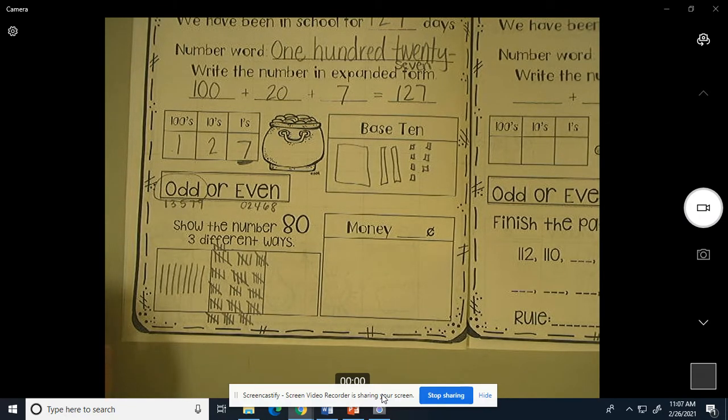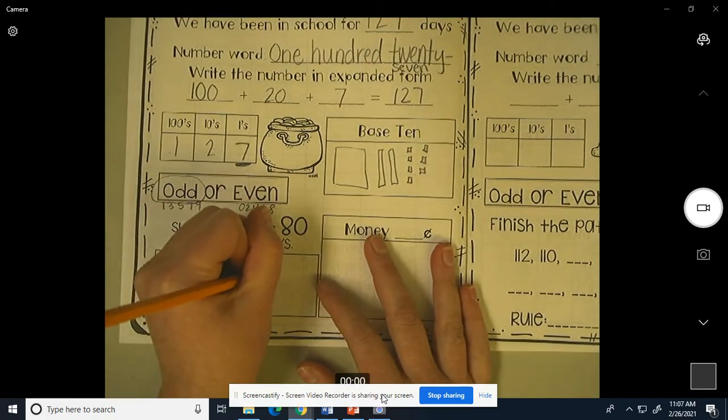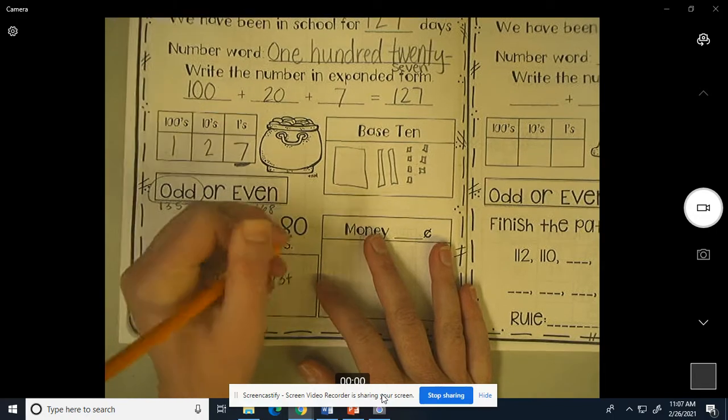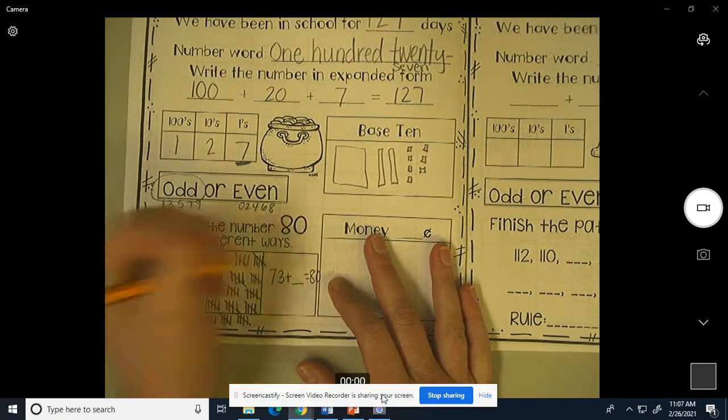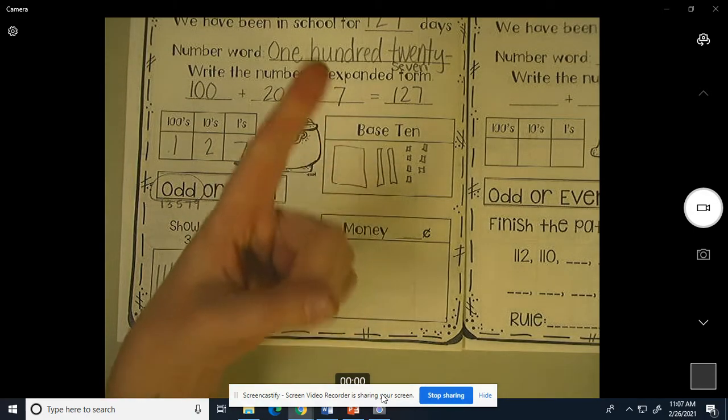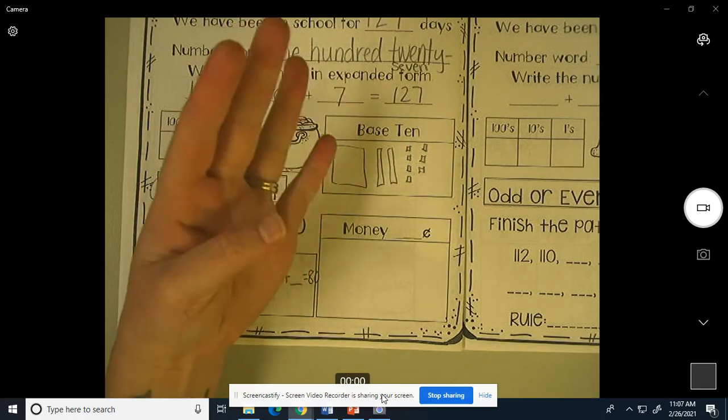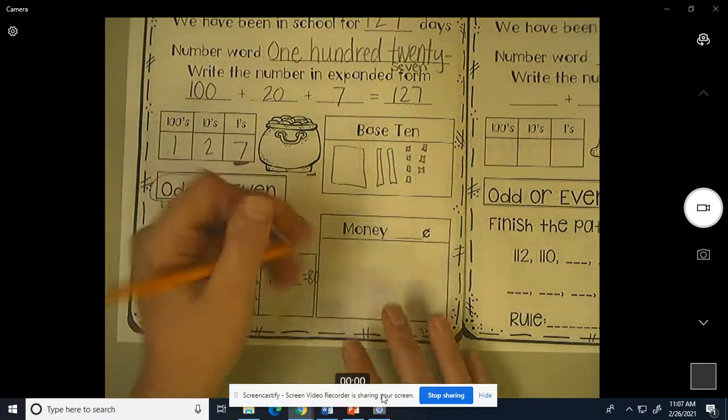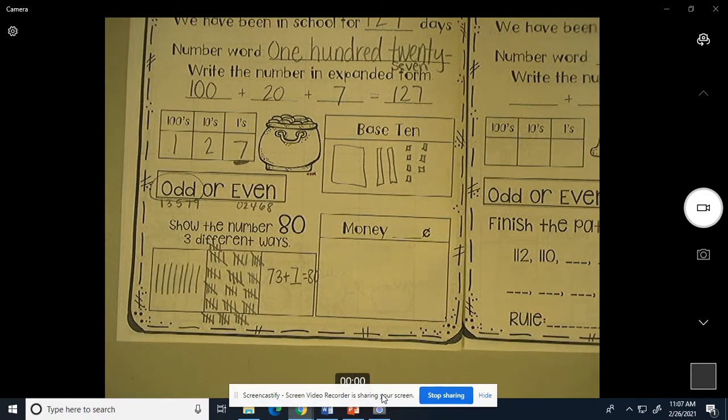And we can do the number 80 as an addition sentence. So if I had 73, how many do I need to get to 80? 73 plus what equals 80? 73, 74, 75, 76, 77, 78, 79, 80. Seven more. Seven more.